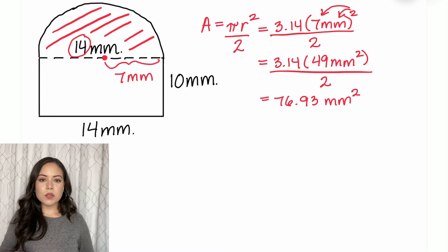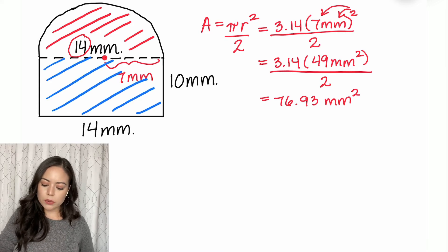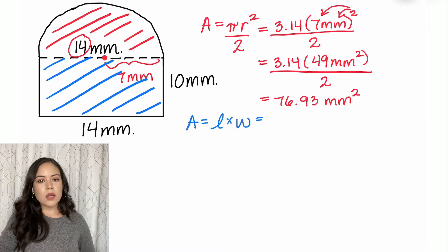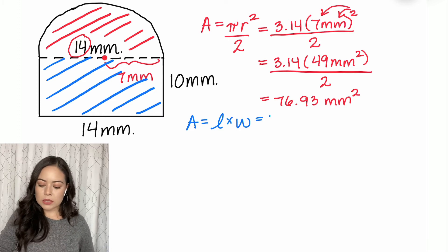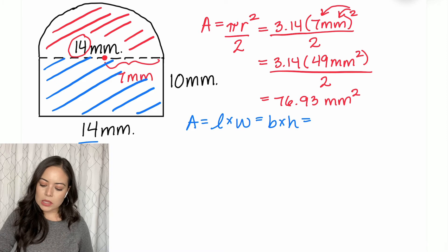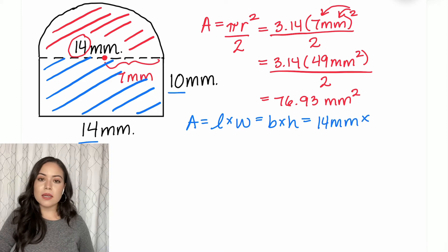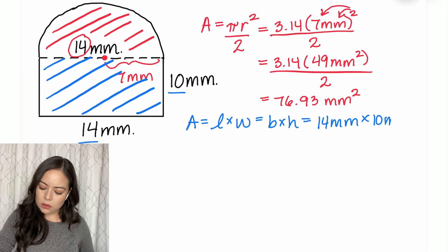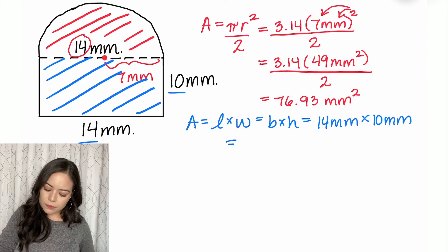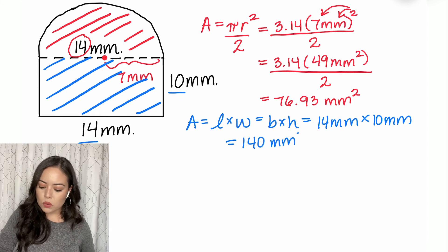To finish this problem, I need to find the area of the rectangle. The area of a rectangle is length times width, or base times height - they're the same thing. So my base is 14 millimeters and my height is 10 millimeters. 14 times 10 is 140, and millimeters times millimeters is millimeters squared.